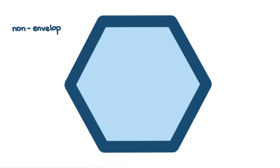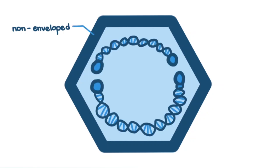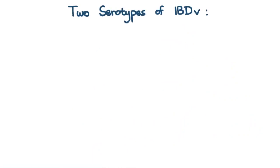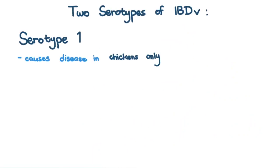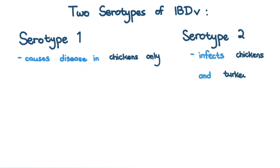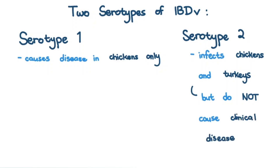The Infectious Bursal disease virus is a non-enveloped virus that has two linear segments of double-stranded RNA. There are two serotypes. Serotype 1 causes disease in chickens only, whereas serotype 2 can infect chickens and turkeys, but does not cause clinical disease.